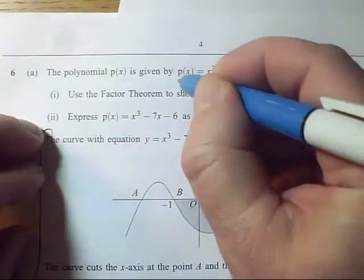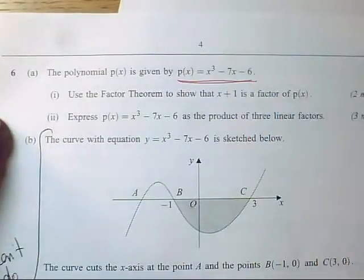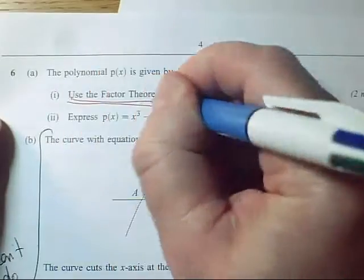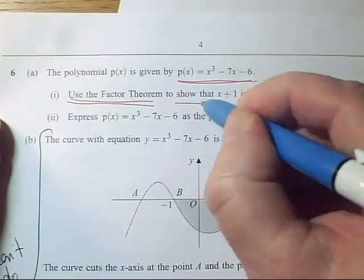In question six we've got P of X, it's a polynomial, it's a cubic. And then we've got to use the factor theorem to show that this is a factor.